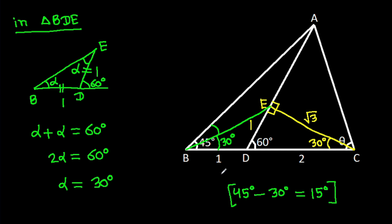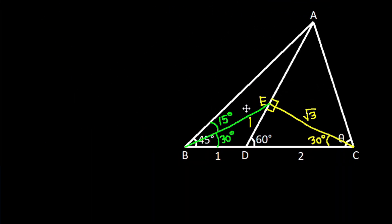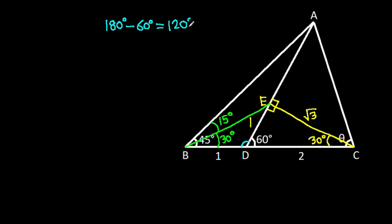It is 15 degrees. And now this angle — angle BDE — will be 180° − 60° = 120 degrees.